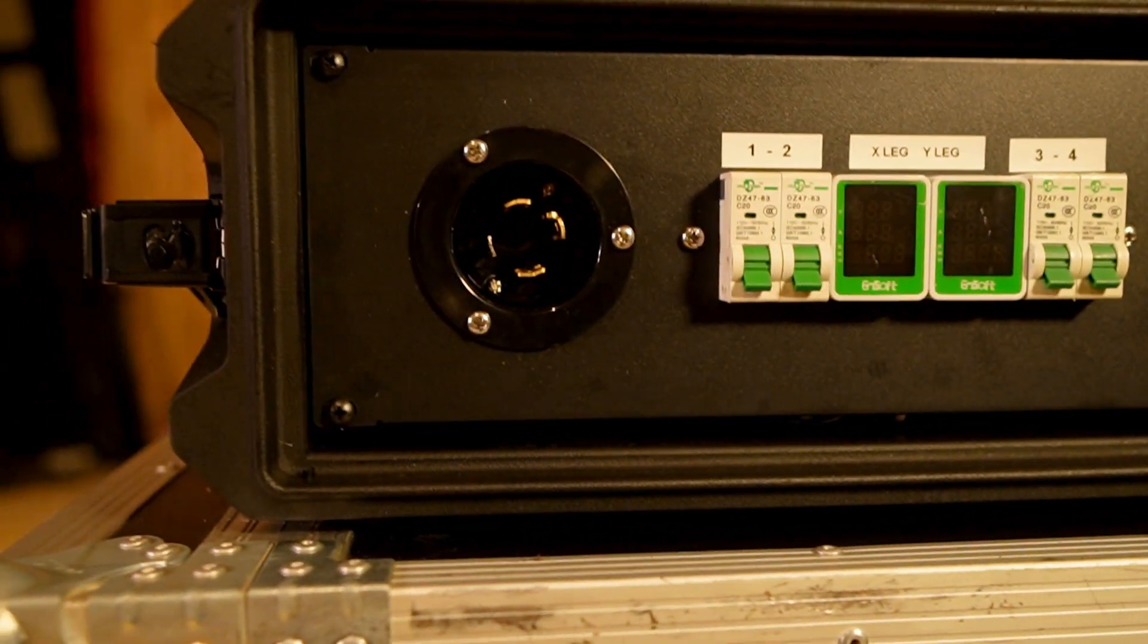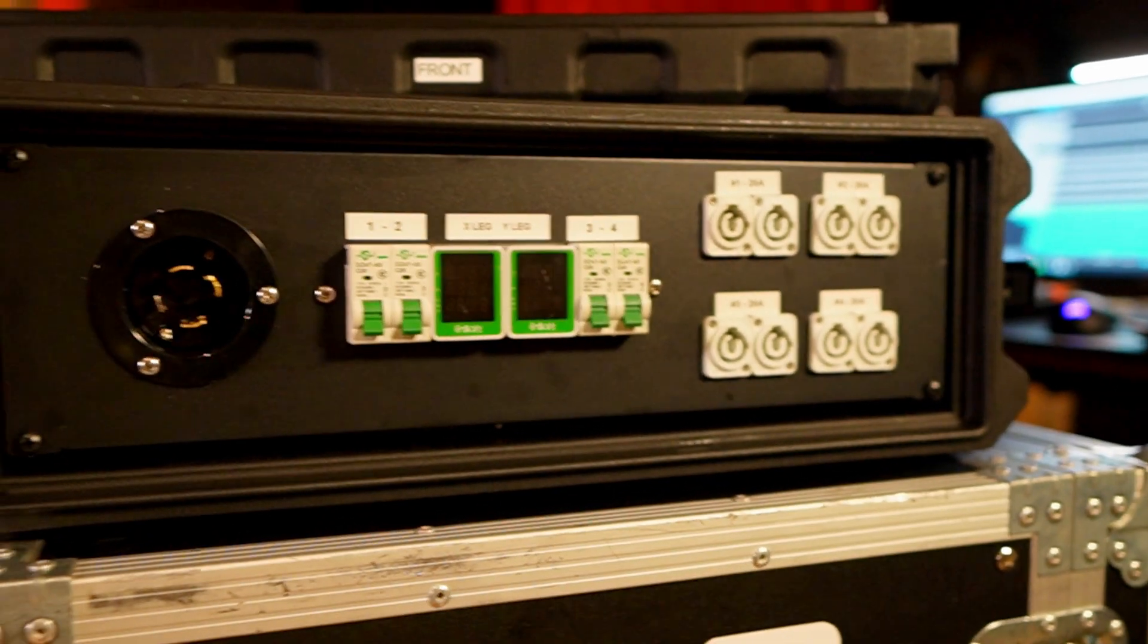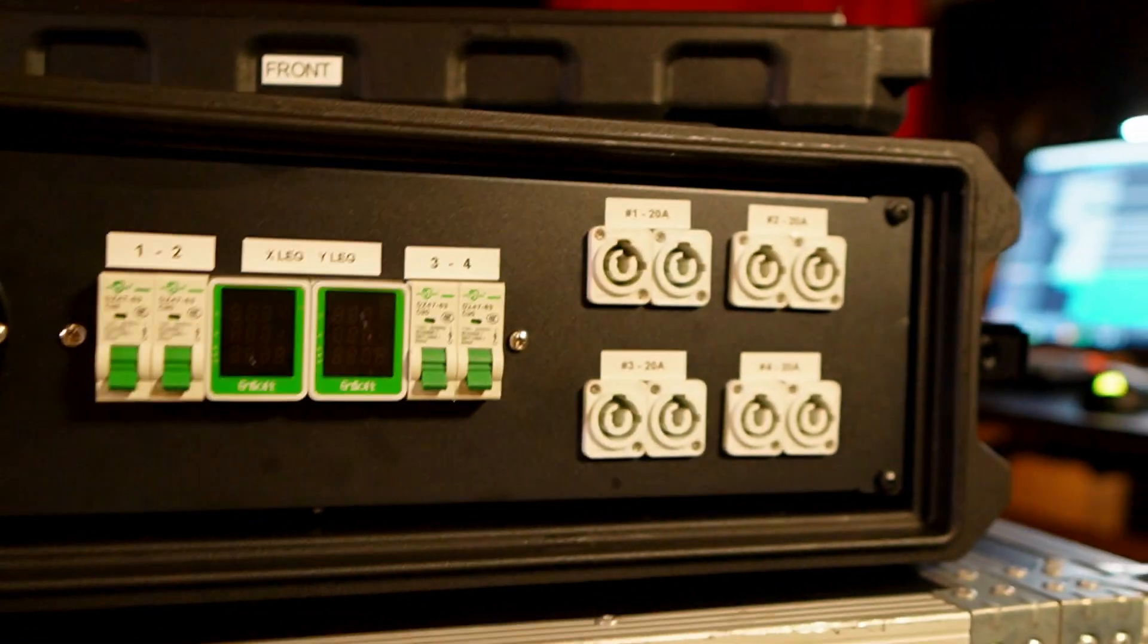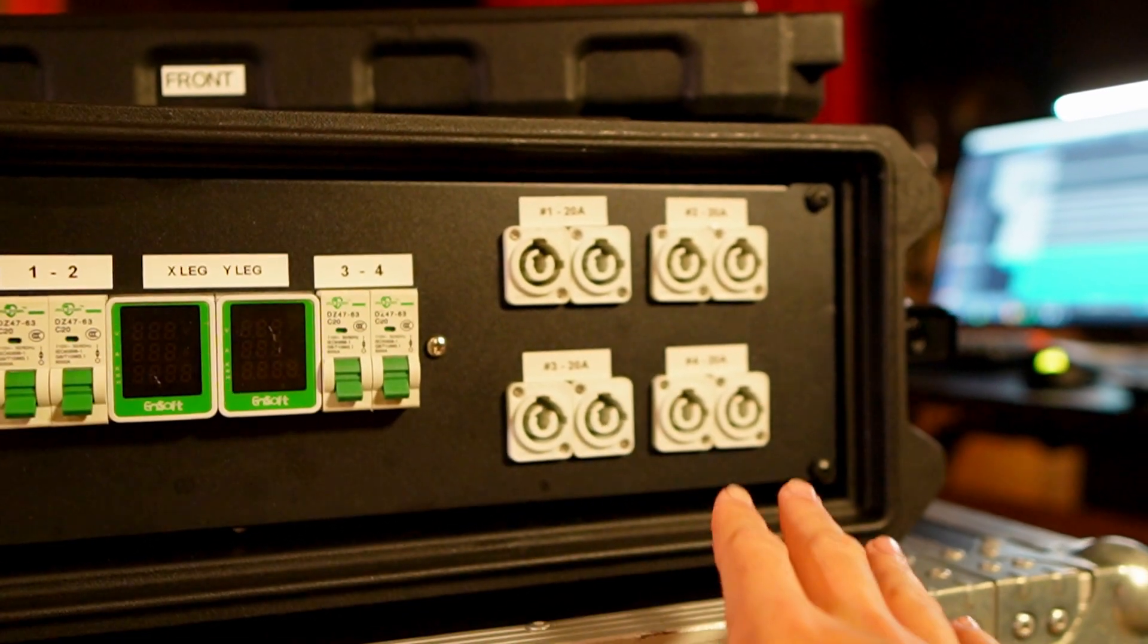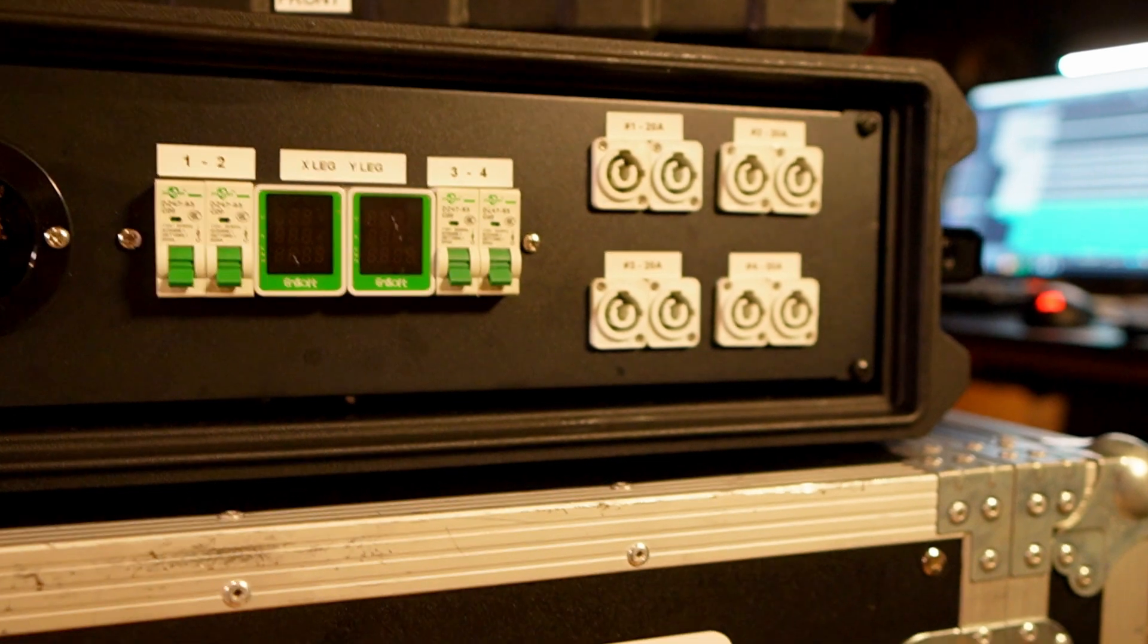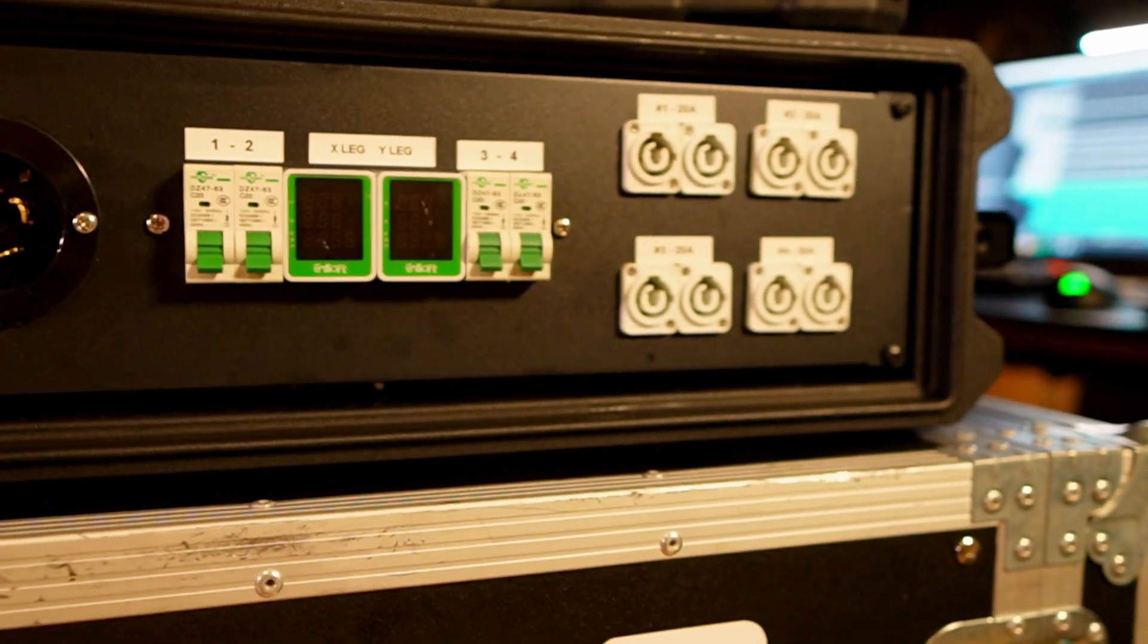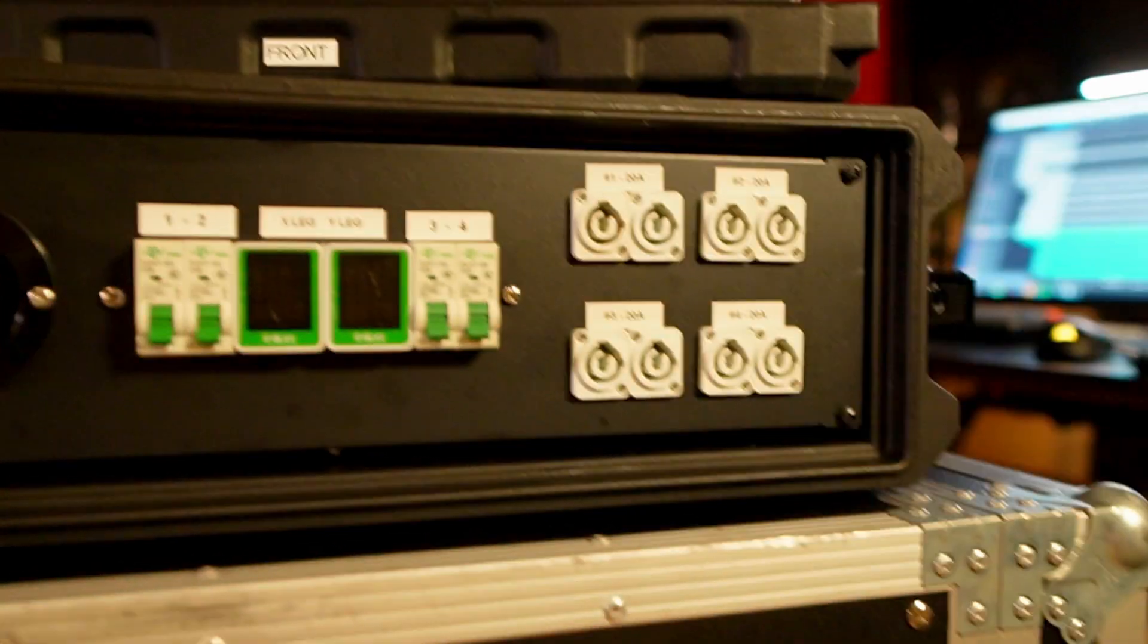But this is primarily for my PA and my lighting rig. So I'll split out the subs and the tops on two different circuits, and then lighting on another circuit and stage power on another circuit. And again, my rig isn't that big, so 20 amps on each one of these circuits is more than enough.